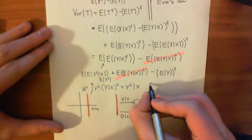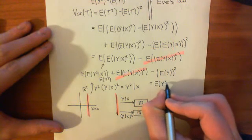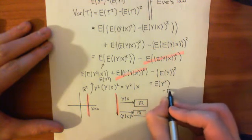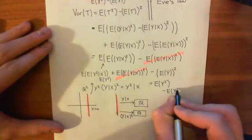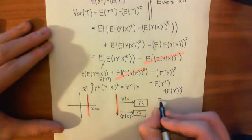So, overall, what we have now got is that this is the expected value of y squared minus the expected value of y, all of that squared, which indeed is the variance of y.